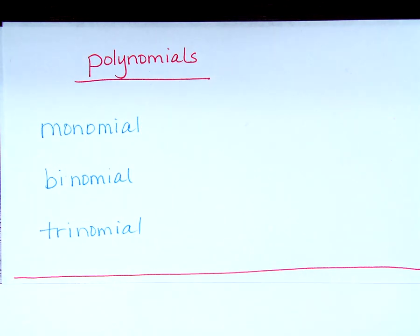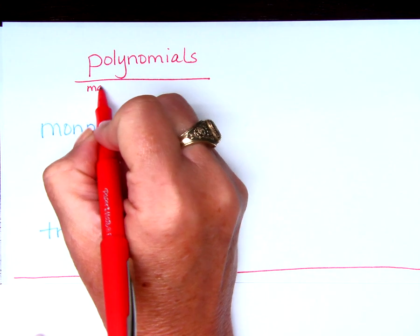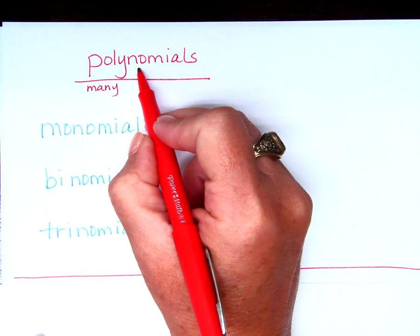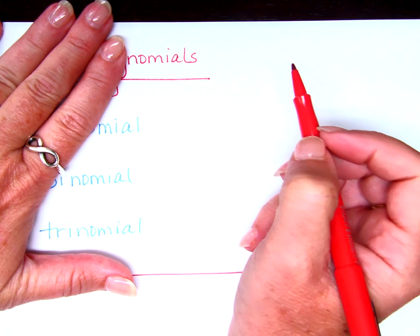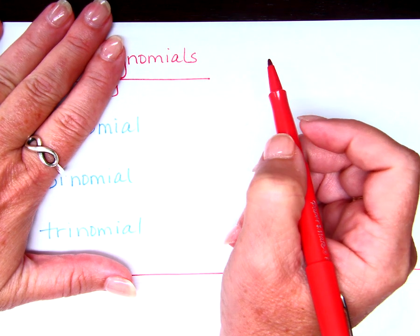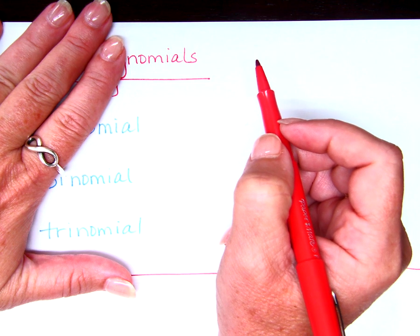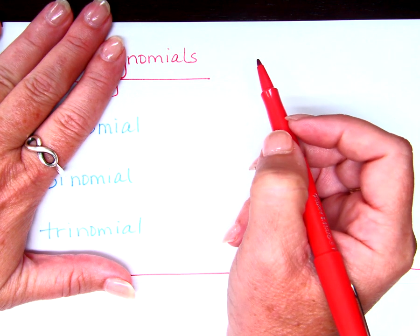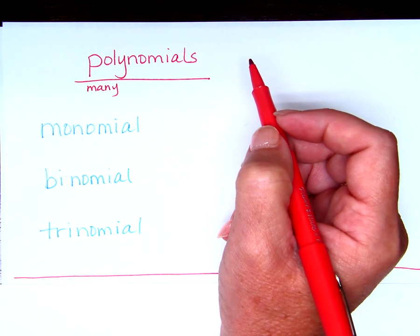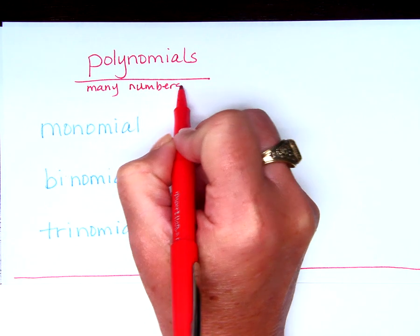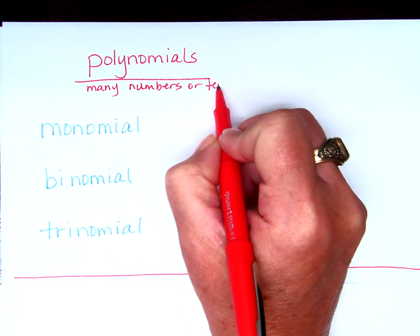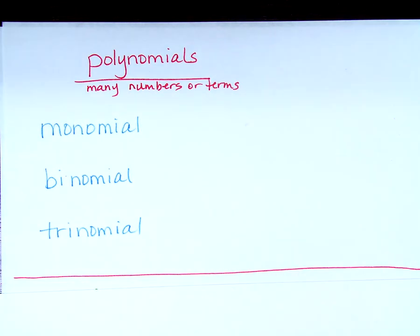Can you break it down into its parts? What's poly mean? Many, right? Multiple or many. And what's nomial mean? Any guesses? We're in math, so would it make sense if it's numbers? We're going to be more specific and say numbers or terms. Polynomials is many numbers or terms.